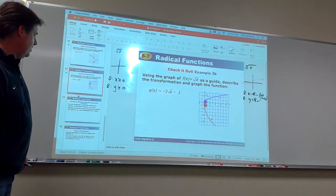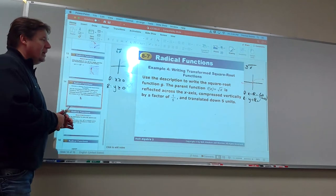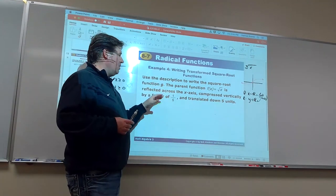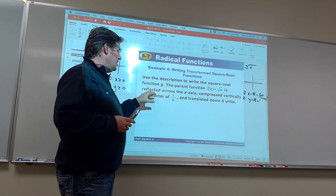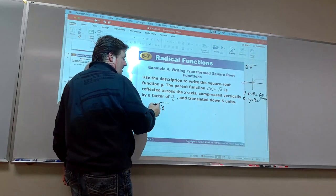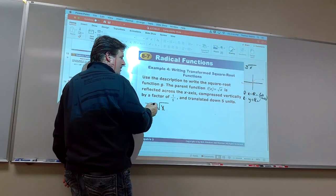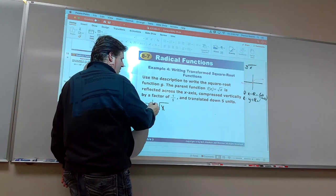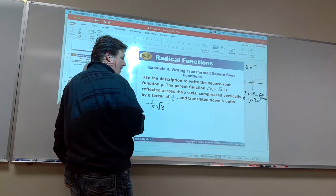Okay. Now, the other thing we're going to do is kind of switch things around. We're going to give you the parent function, square root of x. And we want you to perform these transformations. So, we're going to start. Square root of x. We want to reflect it across the x-axis. Well, that puts a negative out front. Compress it vertically by a factor of 1 fifth. So, we'll just put a 1 fifth on. And then down 5.